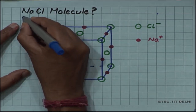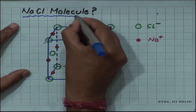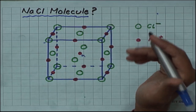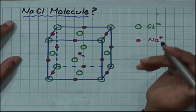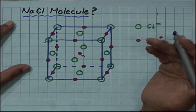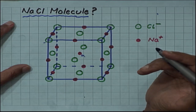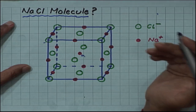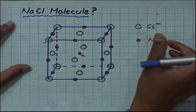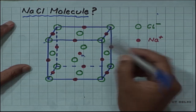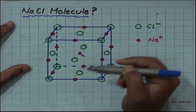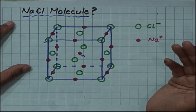When we talk of a sodium chloride molecule, the question is: we think of sodium giving an electron to chlorine, sodium becoming a positive ion and chlorine becoming a negative ion and forming a bond and a molecule. But since 6 chloride ions are equidistant to it, with which chlorine will it form the bond?